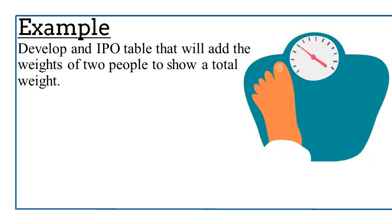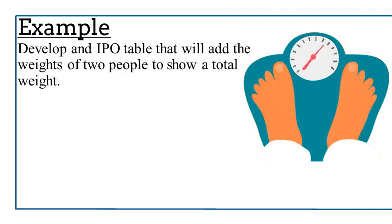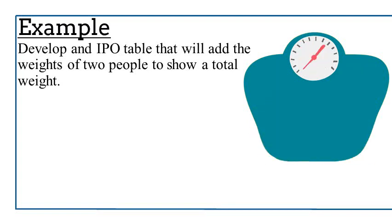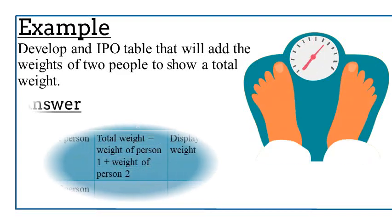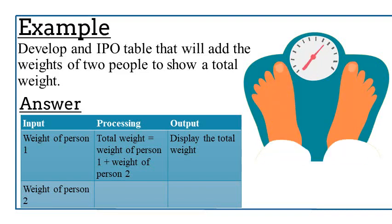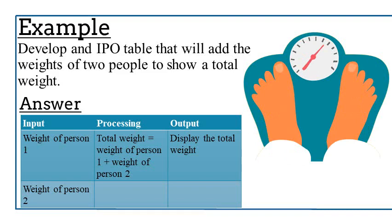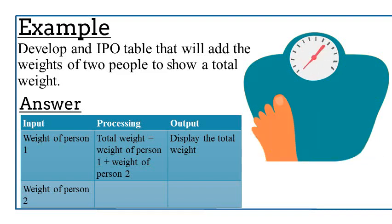Let's work through an example of creating IPO tables. We want to develop an IPO table that will add the weight of two persons to show a total weight. The inputs are the weight of person 1 and the weight of person 2, since both are needed to get the total weight. The processing is: weight of person 1 plus weight of person 2. The output is the total weight.